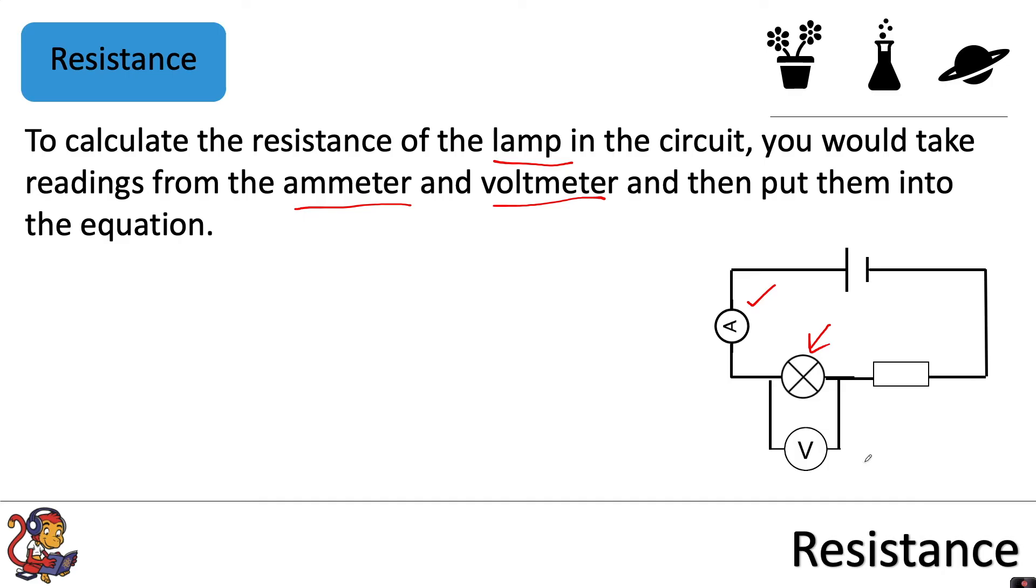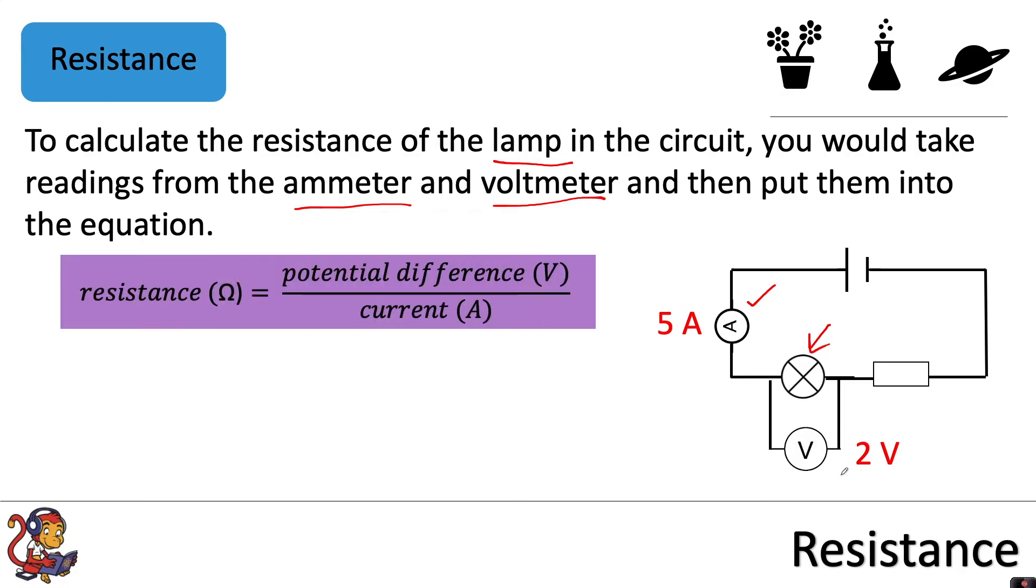So let's say for example the reading on the ammeter was 5 amps and the reading on the voltmeter was 2 volts. We could calculate the resistance of this lamp by using our equation and putting our numbers in, so we've got 2 volts, which is the potential difference, divided by 5 amps, which was the current. So the resistance of this lamp would be 0.4 ohms.